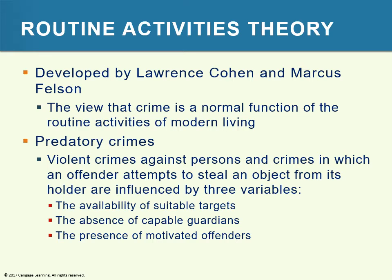These variables have to essentially be present for a juvenile to act. First, there must be availability of a suitable target — examples include costly jewelry, expensive cars, and easily transportable goods. Second, there must be absence of a capable guardian — no police officers, no homeowners, no security systems. Third, there's a presence of motivated offenders — youth who are unsupervised, unemployed, or an addicted population. When we look at how to stop this as police officers or the criminal justice system, those three variables are quite interesting.